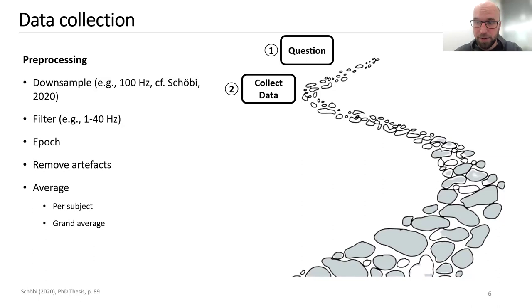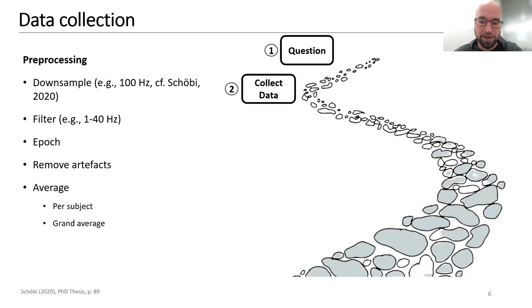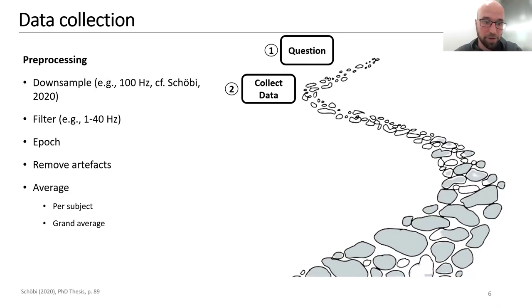When it comes to data, you first collect it and then follow the usual pre-processing steps as you would for an ERP analysis: downsample the data — and I would recommend downsampling more strongly, as SPM assumes data points are fairly uncorrelated across time and to make this assumption valid you need to downsample quite drastically. Then filter your data, epoch, remove artifacts, and average to increase signal-to-noise — either per subject or across subjects using a grand average.